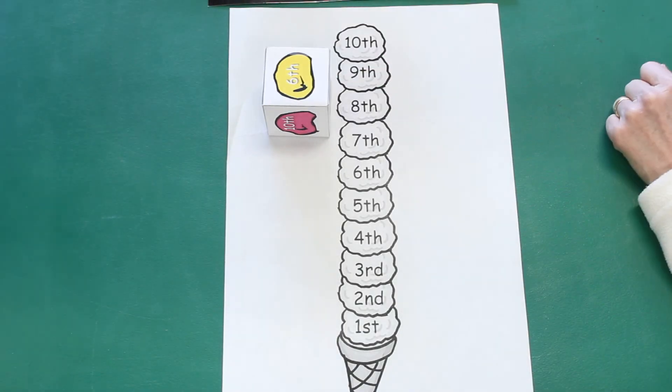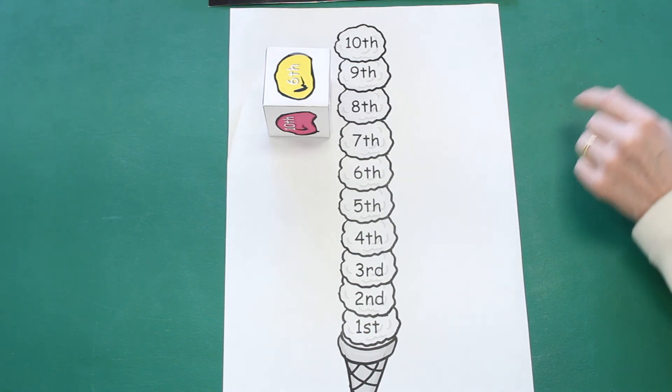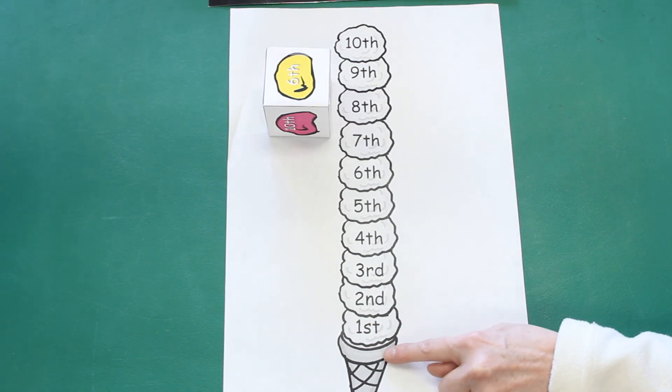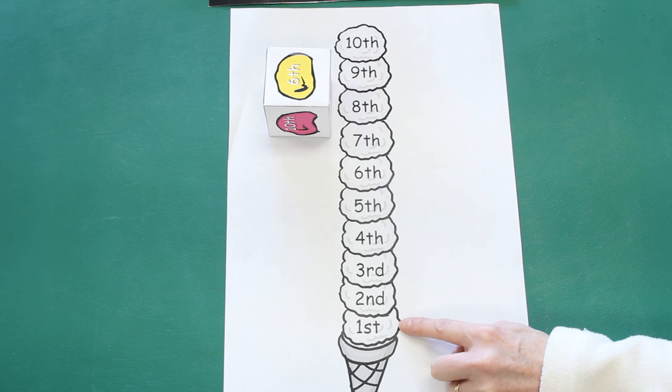All right, let's play an ice cream scoop game. I have a bunch of scoops of ice cream on my cone. Oh, there's a 3D shape cone. And there are some scoops of ice cream on my cone.